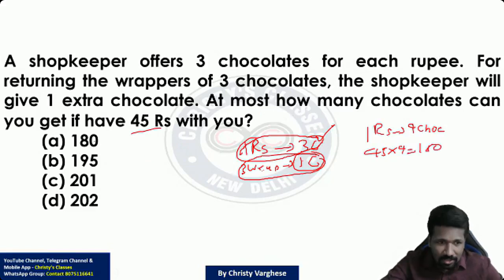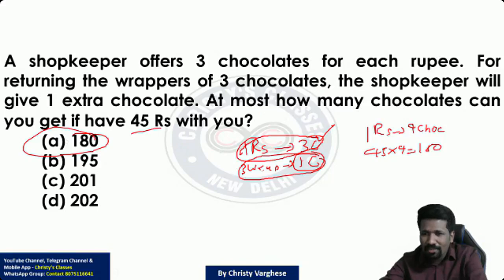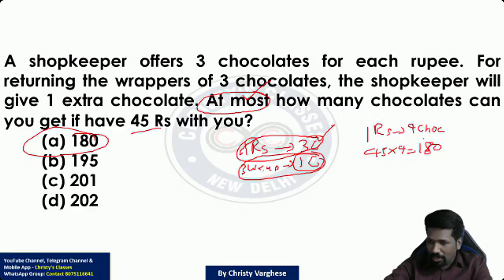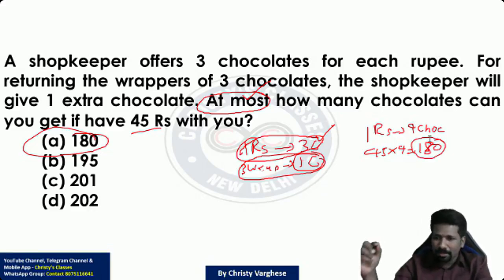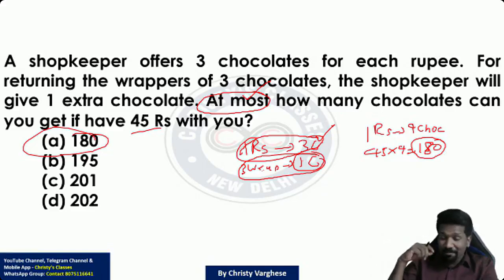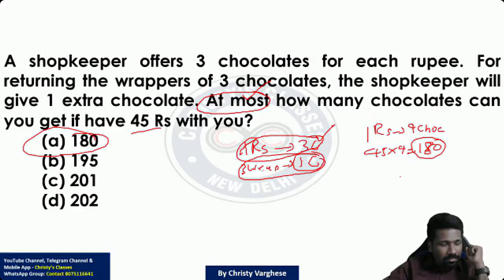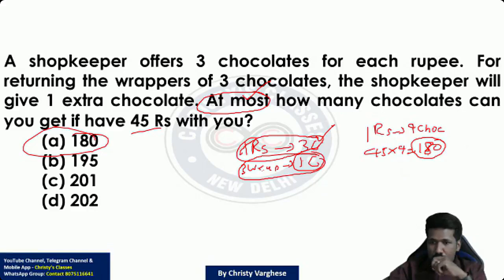The answer is 202. This question was introduced for two reasons: first, to show you what a quantitative aptitude problem looks like; second, to show how UPSC can trick you with the options. You could be tempted to answer 180, 195, 200, or 201 — all of which appear in the options — but the correct answer requires carefully working through every step. With options as a double-edged sword, they can help you solve questions faster, but they can also mislead you into choosing a partially-worked answer.